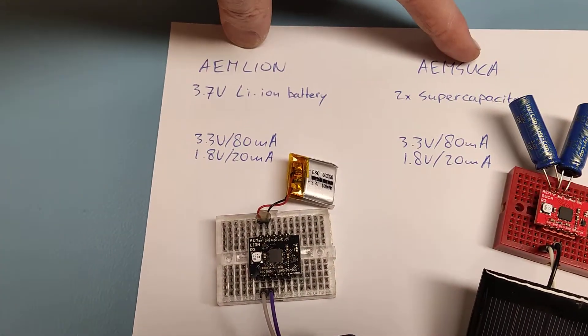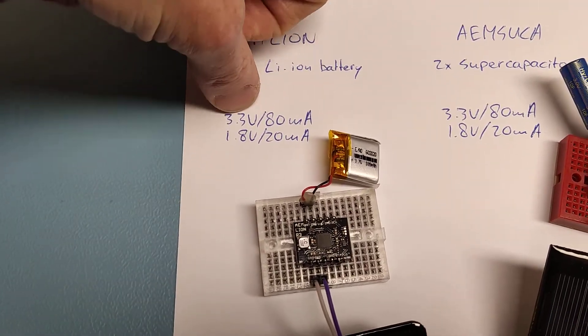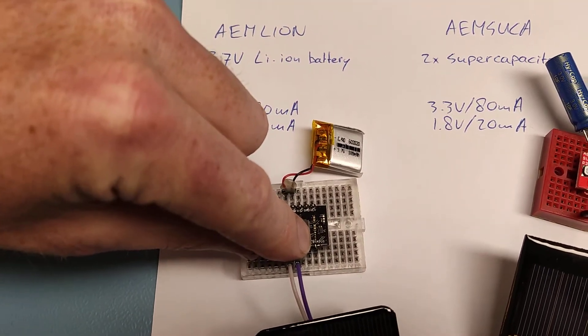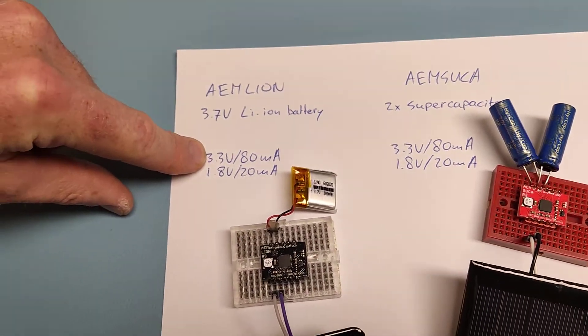These two boards have two regulated output voltages: 3.3 volt and 1.8 volt. Using a tiny solder jumper, you can adjust the 3.3 volt to 2.5 volt.